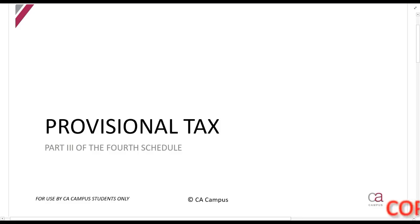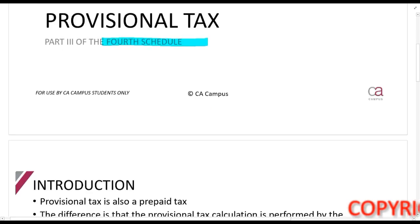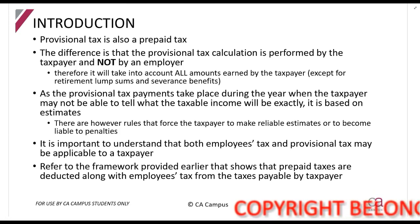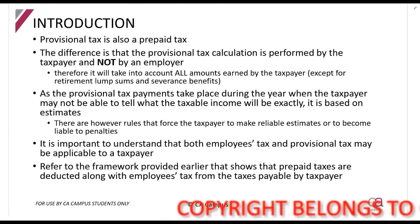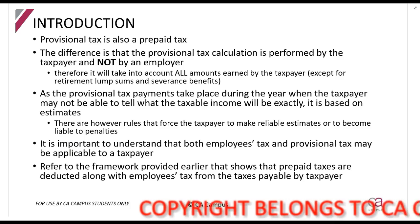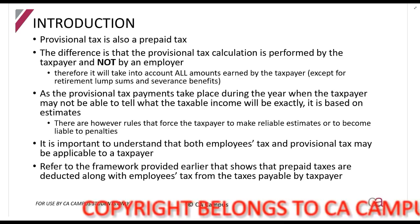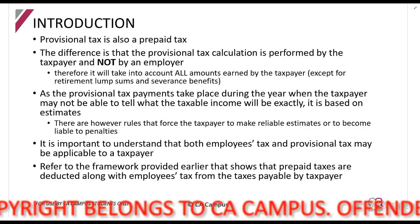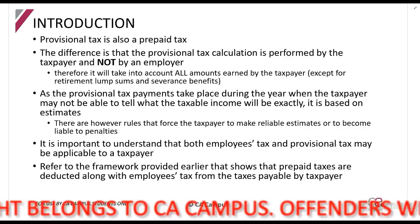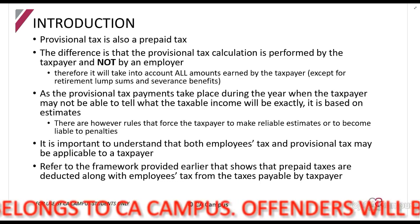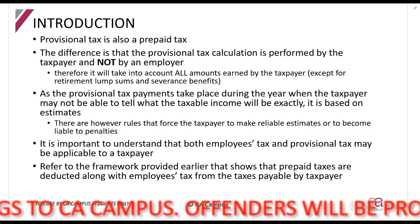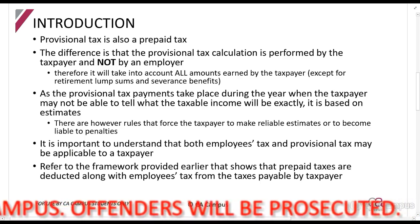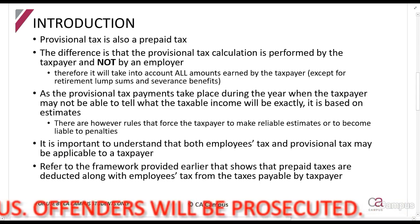We are now going to be looking at provisional tax, which is also part of the Fourth Schedule. Provisional tax is also a prepaid tax, but the big difference between provisional tax and employees tax is who calculates and pays it. Employees tax is calculated and paid across to SARS by the employer, whereas provisional tax is calculated and paid across to SARS by the taxpayer himself.